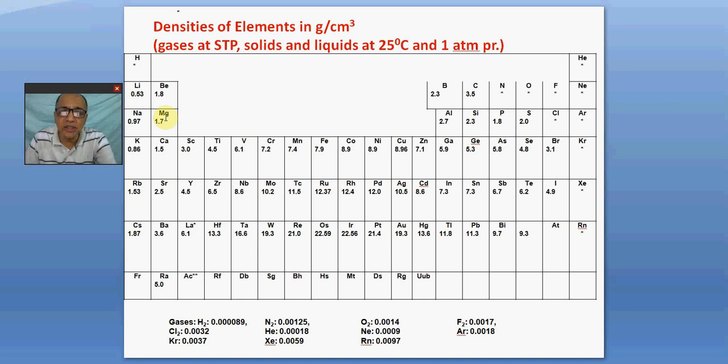And in second period, it goes on increasing. Lithium is 0.53, beryllium is 1.8, boron 2.3, carbon 3.5. Then suddenly molecular entities come in. Nitrogen is a gas, its density is 0.00125. So these are almost - nitrogen, oxygen, more or less the same. Fluorine is more or less the same. Neon is a little less, 0.0009. So it decreases.